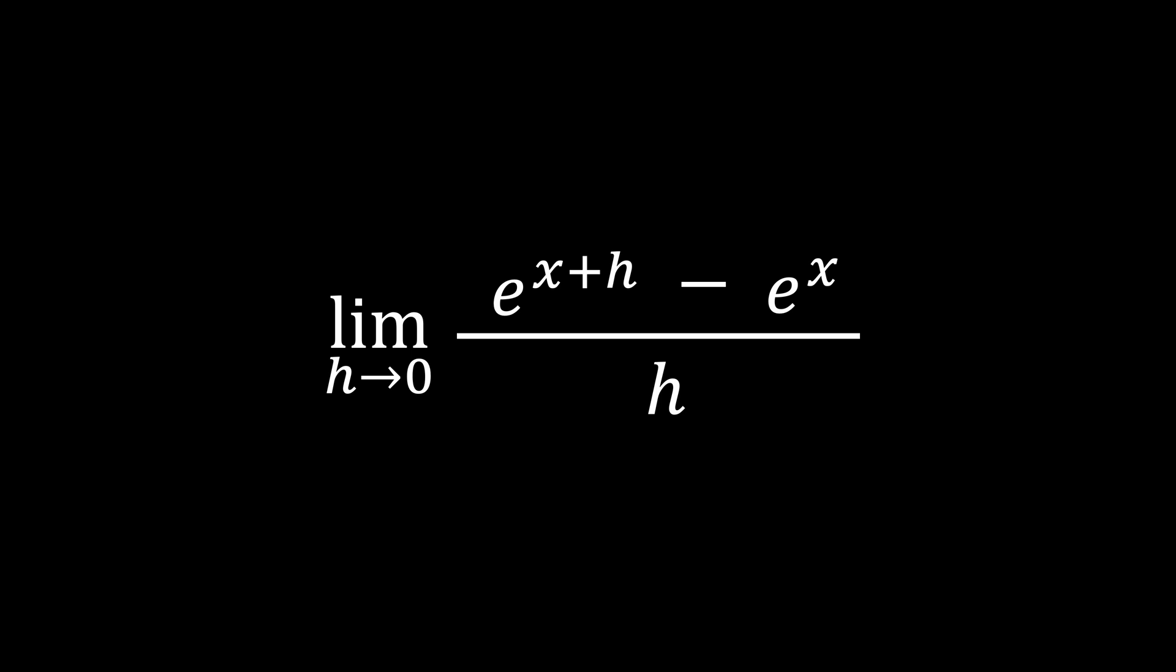To begin, we can factorize the exponential function out of the numerator and since e to the x is a constant with respect to the limit variable h, we can factor this term out of the limit.